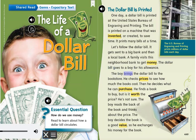The boy brings the dollar bill to the bookstore. He checks prices to see how much the books cost, then he decides what he can purchase. He finds a book to buy, but is it worth the price? He's not sure. The boy reads the back of the book and thinks about the price. He decides the book is a good value, so he exchanges his money for the book.